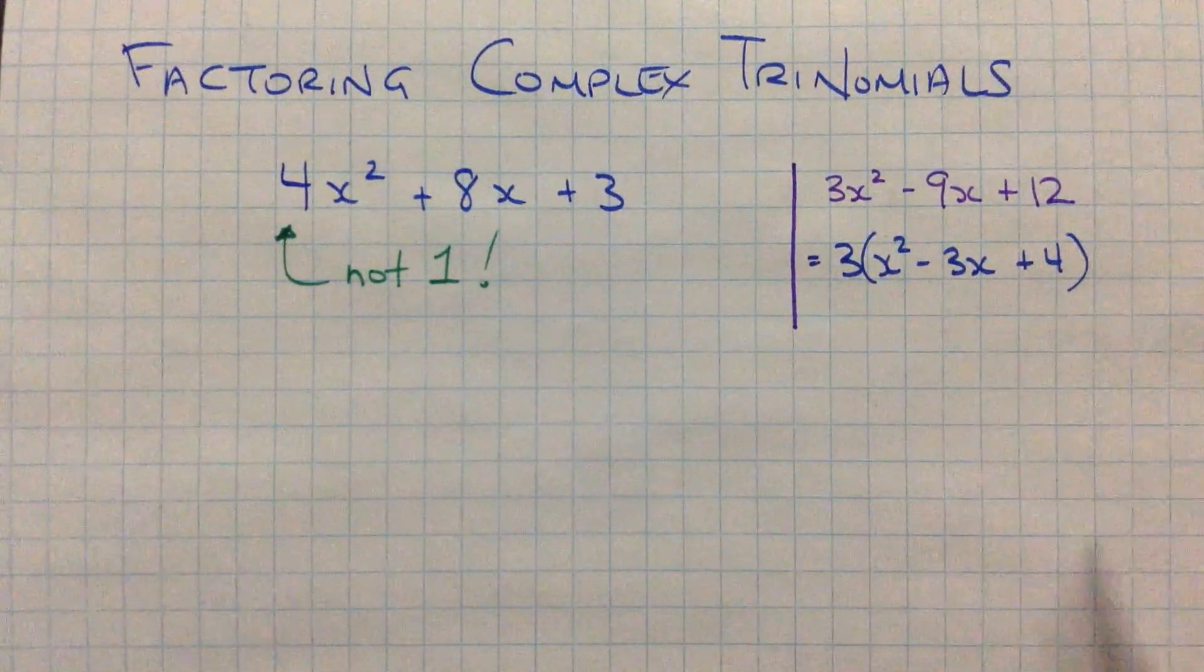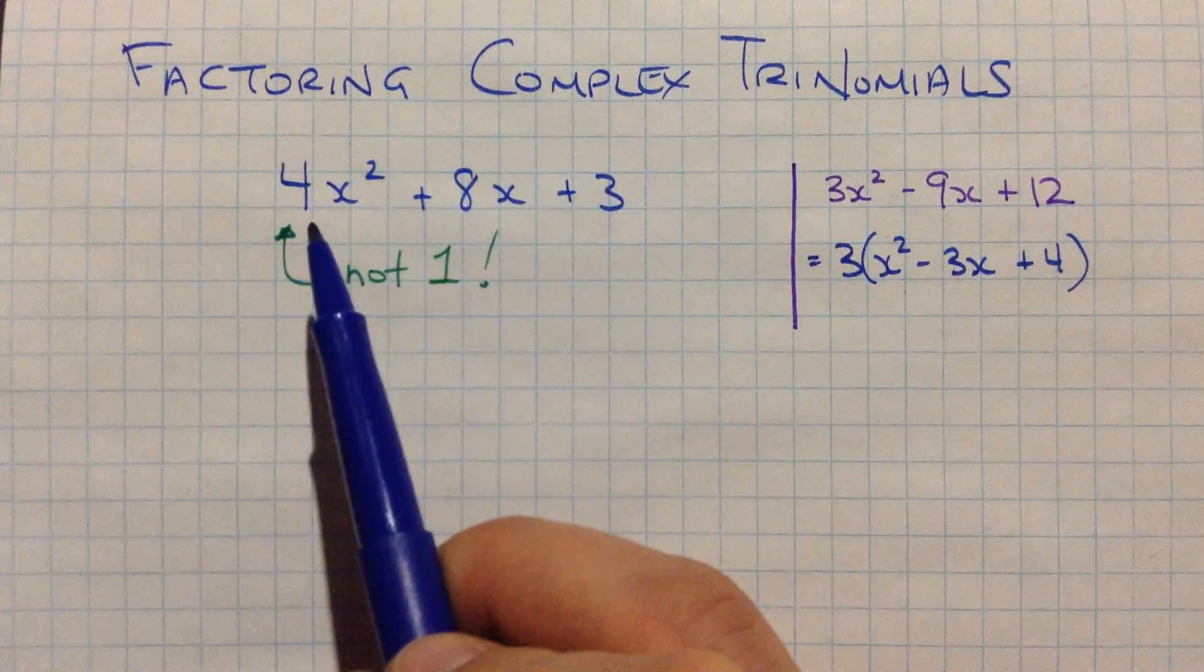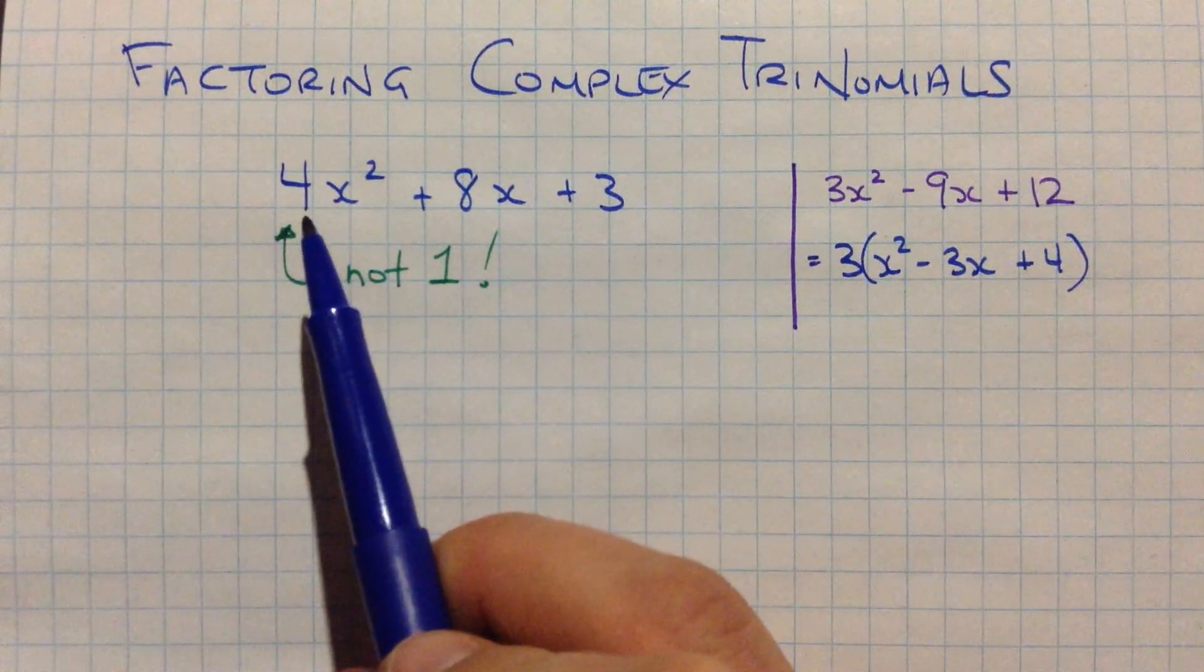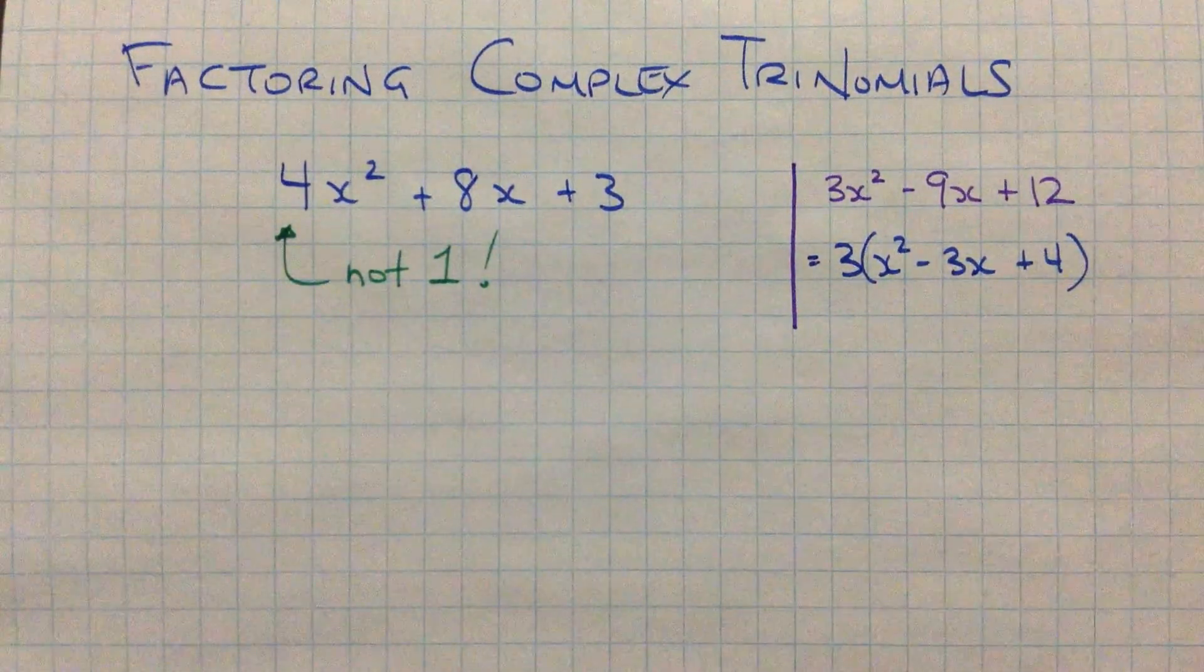So we're not going to work on this type today. That's from before. Go back and take another look. But this type, where we have a leading coefficient, we call it, that is not one, this is the kind that we're going to work on today.